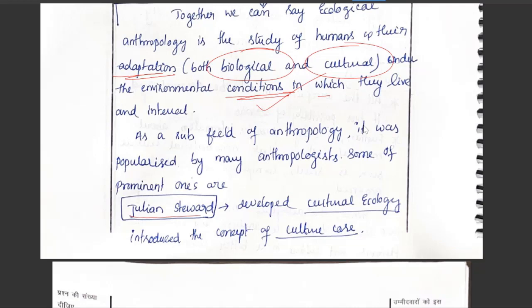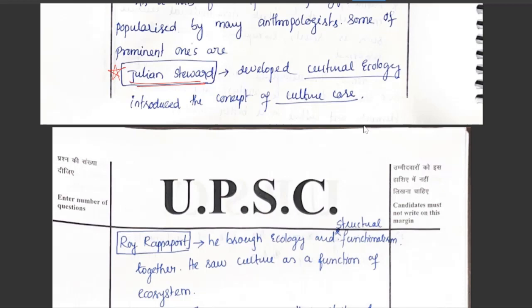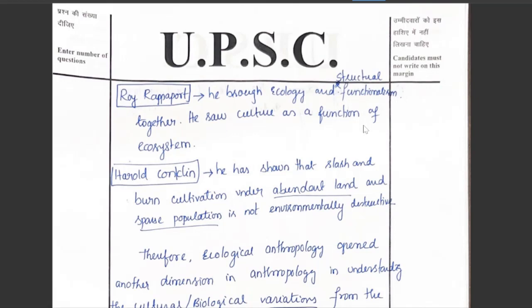One of the prominent figures is Julian Steward, who developed the cultural ecology method. He belongs to the new evolution school and introduced the concept of the 'cultural core.' We will discuss his contributions further under classical evolution and new evolution sections.